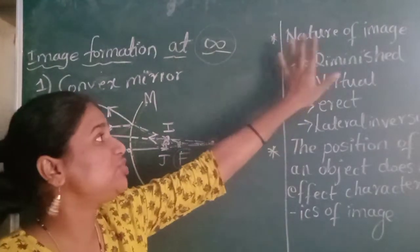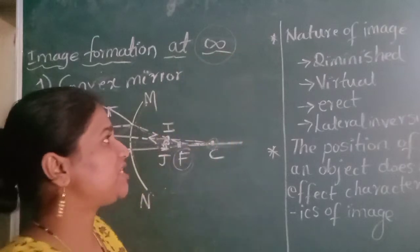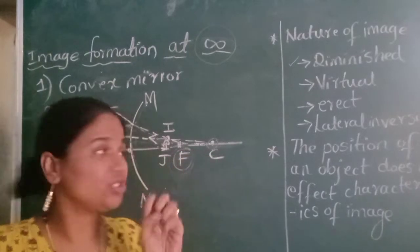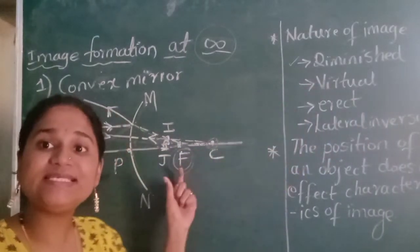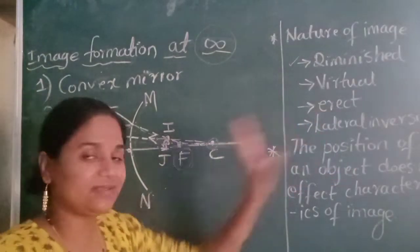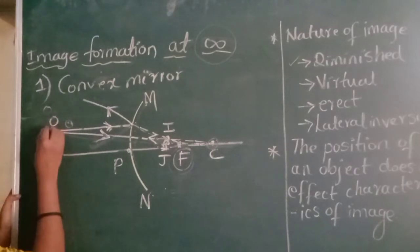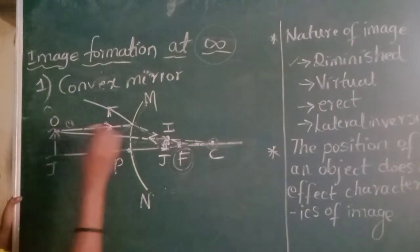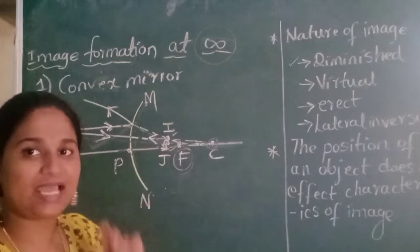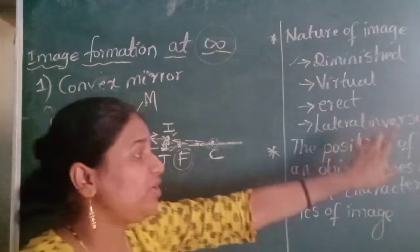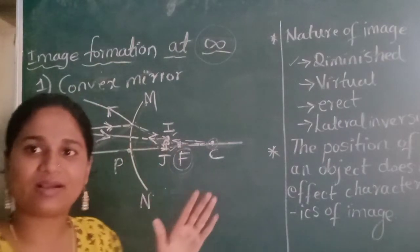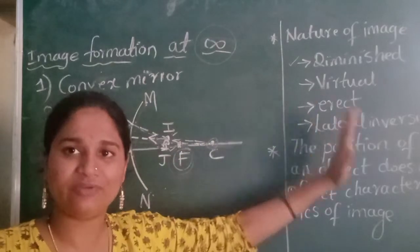When we consider the nature of the image formed by the convex mirror, it will be diminished — diminished means smaller in size. It will be virtual, meaning this image cannot be obtained on a screen. It will be erect — if OJ has a head at top and tail at bottom, the image will also be straight, not inverted; it is erect and upright. And there will be lateral inversion, as we also learned through the plane mirror — right means left and left means right, that is lateral inversion.